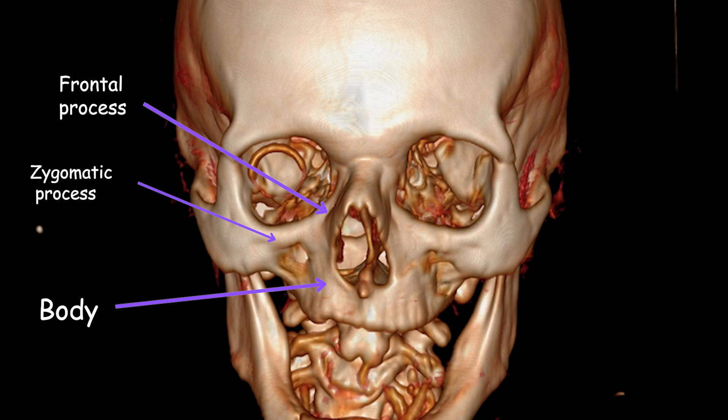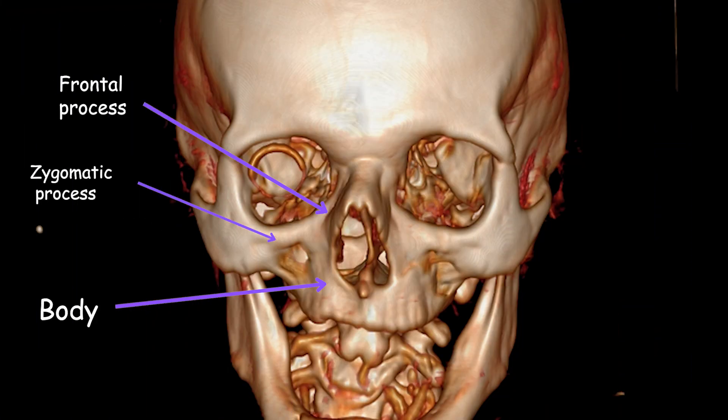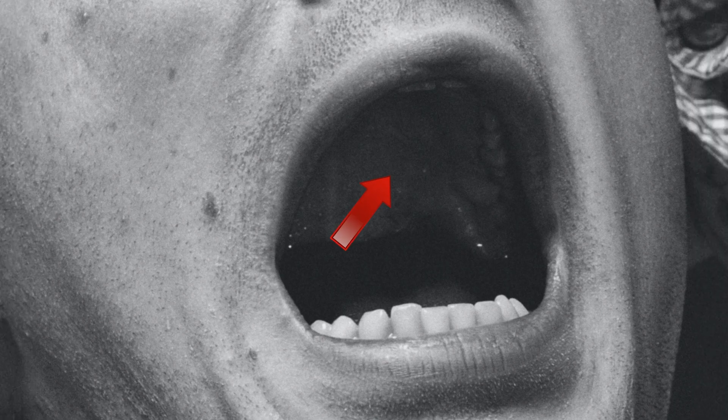The body of the maxilla forms the majority of the bone and contains the sockets for the upper teeth. The frontal process extends upward and contributes to the medial wall of the orbit and the lateral nasal wall. The zygomatic process projects laterally and articulates with the zygomatic bone, forming the prominence of the cheekbone. The palatine process forms the anterior part of the hard palate, contributing to the roof of the mouth.